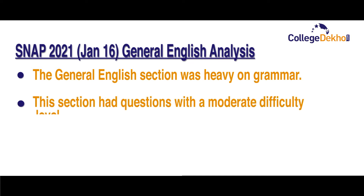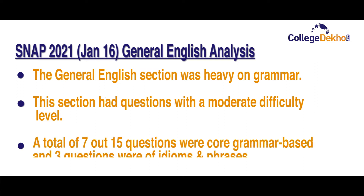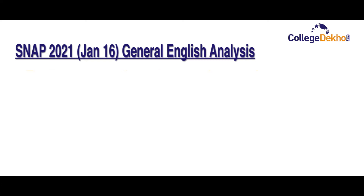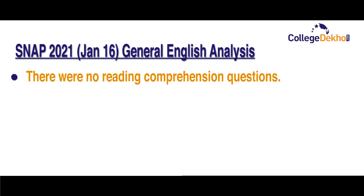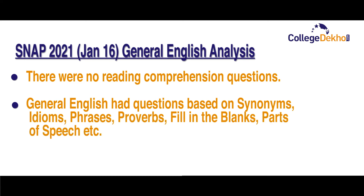Now let us analyze the General English section. This section was heavy on grammar with a moderate difficulty level. A total of seven out of fifteen questions were core grammar-based and three questions were on idioms and phrases. There were no reading comprehension questions. It had questions based on synonyms, idioms, phrases, proverbs, fill in the blanks, parts of speech, etc.